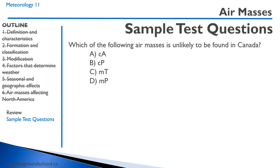Question: Which of the following air masses is unlikely to be found in Canada? Continental Arctic — we have that over our northern territories. Continental polar is over the majority of Canada much of the time. Maritime tropical is pretty unlikely, as it's hot, moist air and the Caribbean doesn't come to Canada very often. Maritime polar we see all the time in the coastal regions. So the correct answer is C, maritime tropical is unlikely.